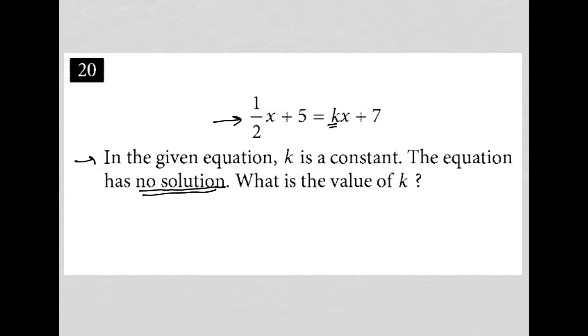So how do equations have no solution? On this test, there's two ways, and they go together. The first thing that we're looking for is for the variables to cross out. So variables must cross out. That's the first step.